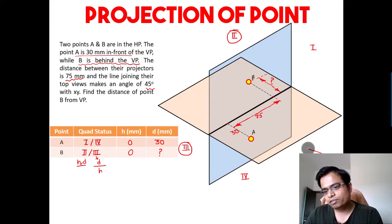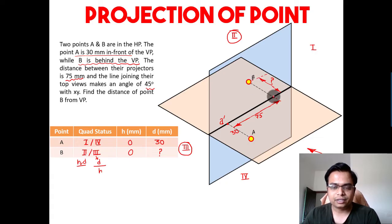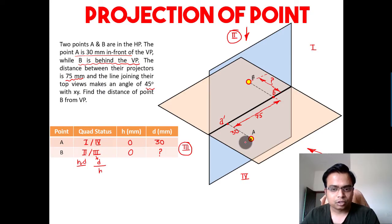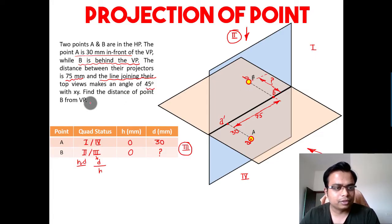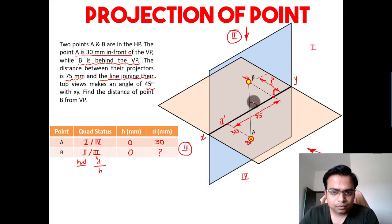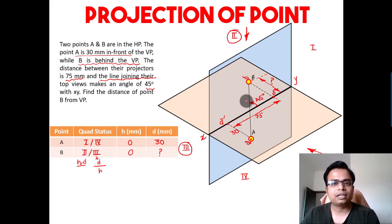The front view of A will be right here — A dash. The front view of B will be right here — B dash. When viewed from the top, the top view of A is here and the top view of B is here. The statement says that the line joining their top views — when A is joined with B — makes an angle of 45 degrees with the XY line, which is the intersection of HP and VP.